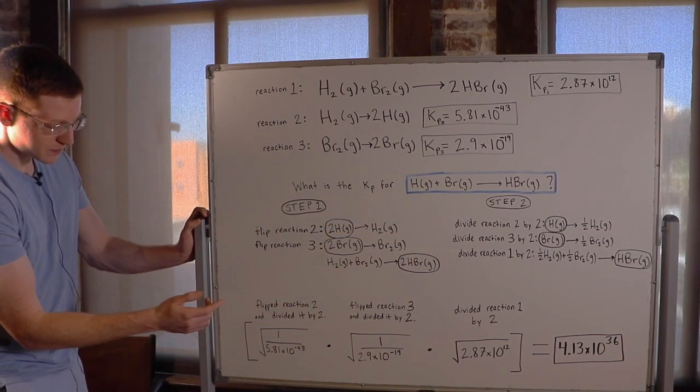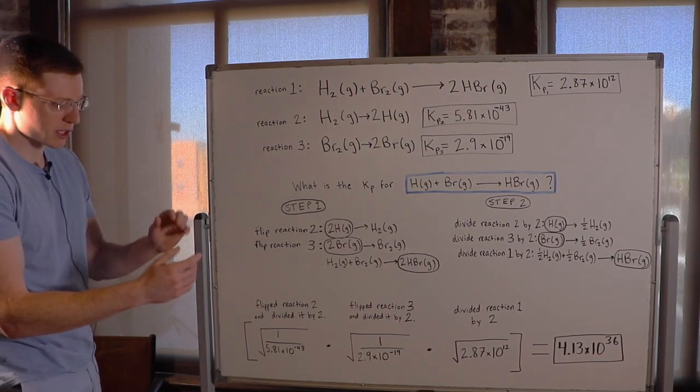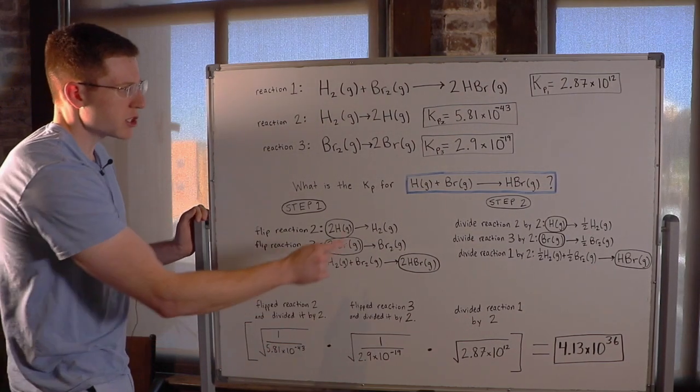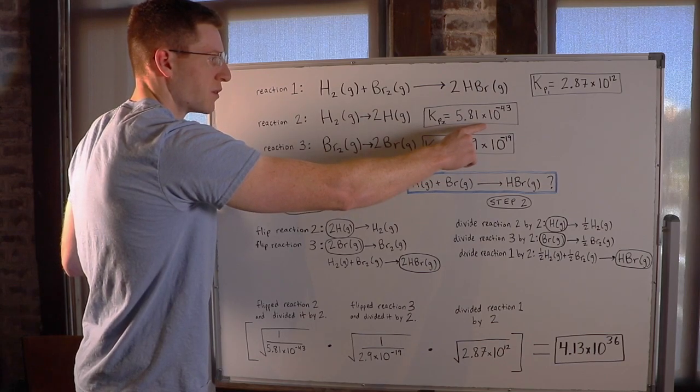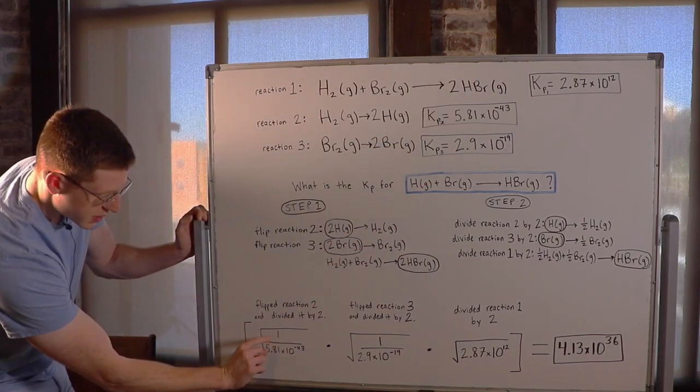Remember, when you flip a reaction, you have to take the inverse of its K. So reaction 2 had a K of 5.81 times 10 to the negative 43. So you can see I flipped it.